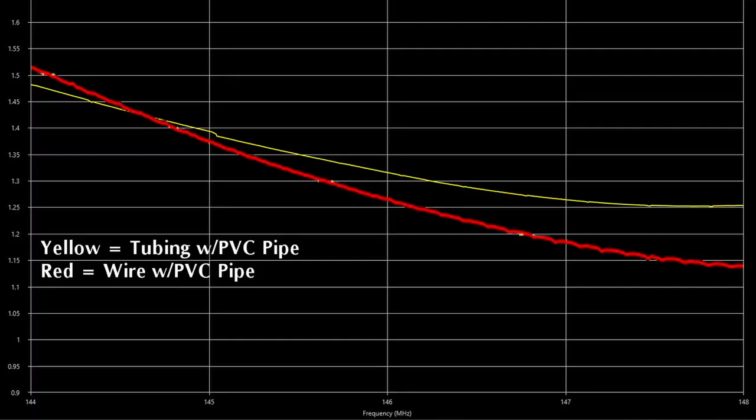As you can see here, the performance is very similar to the wire version. The SWR is below 1.5 to 1 across the entire 2 meter band.